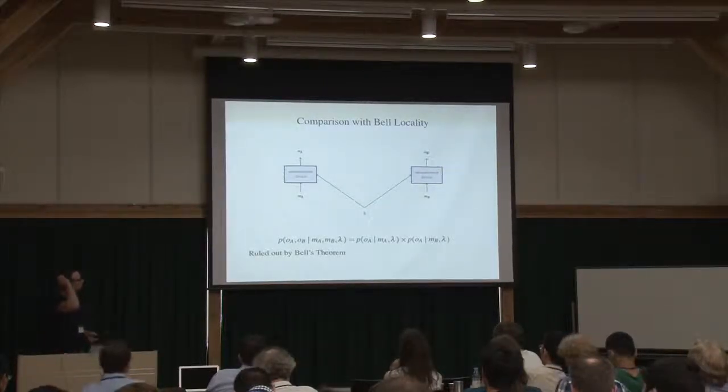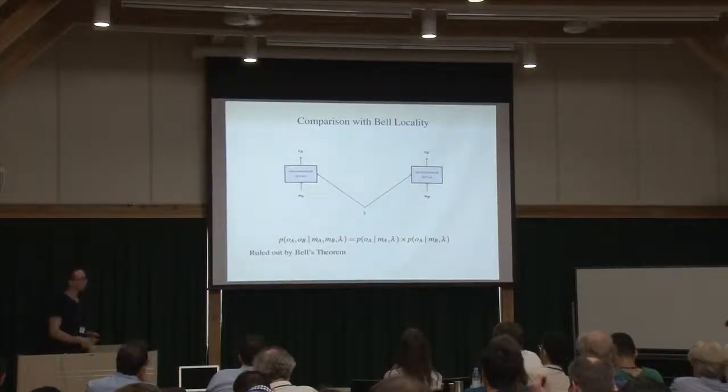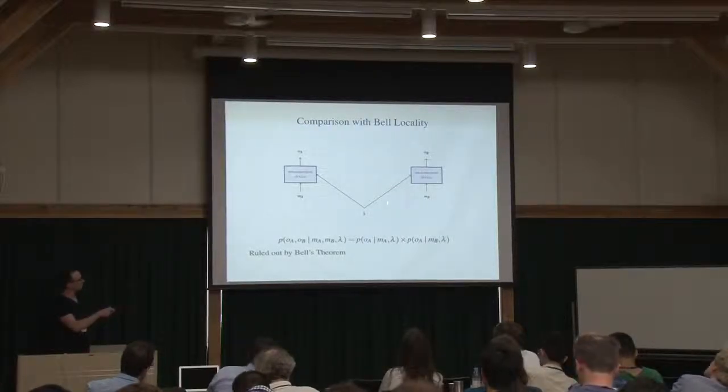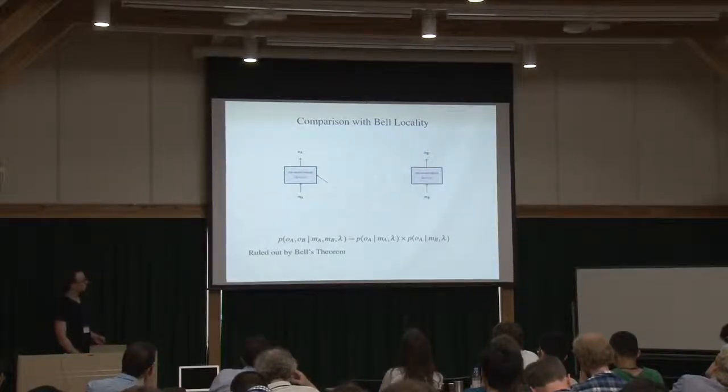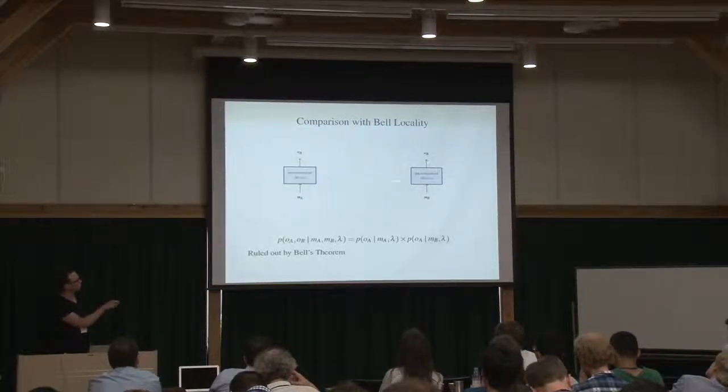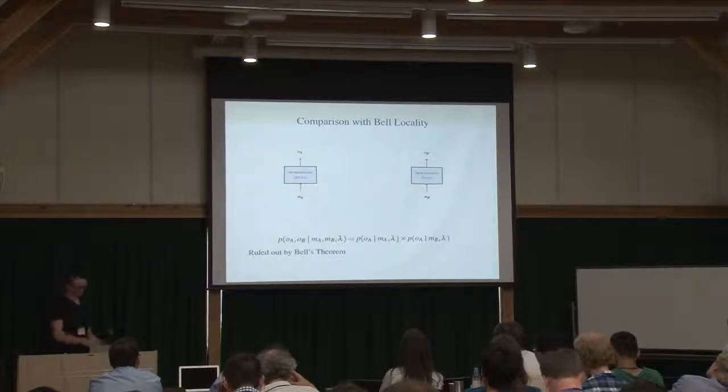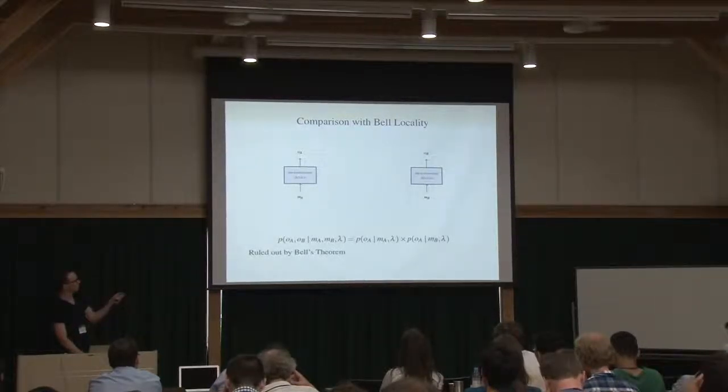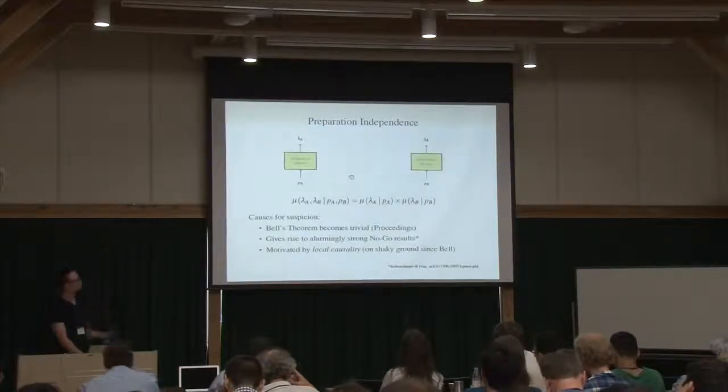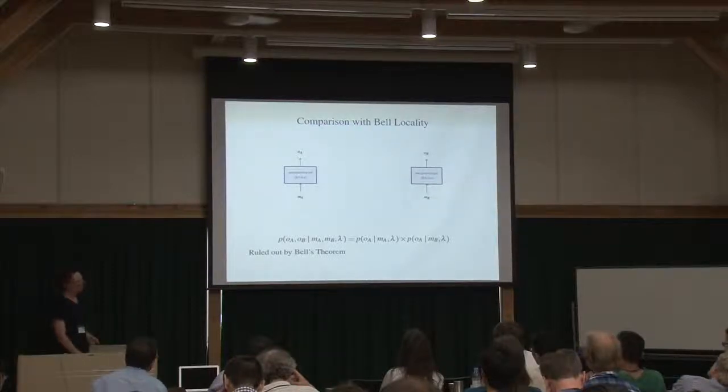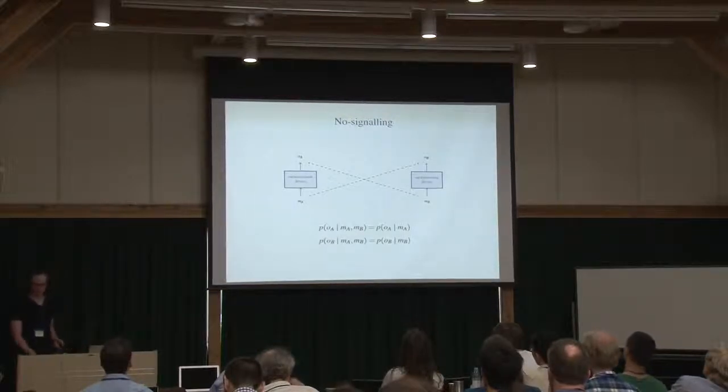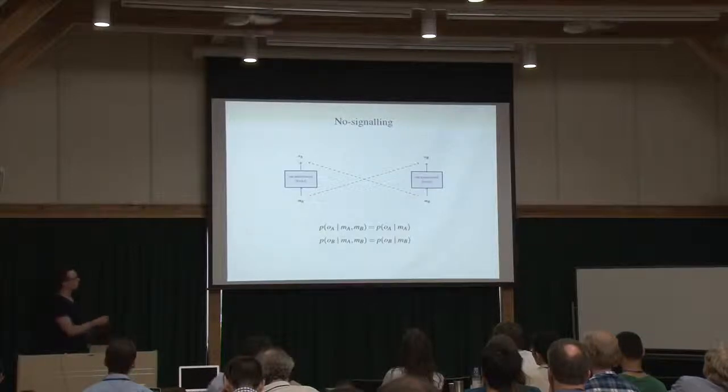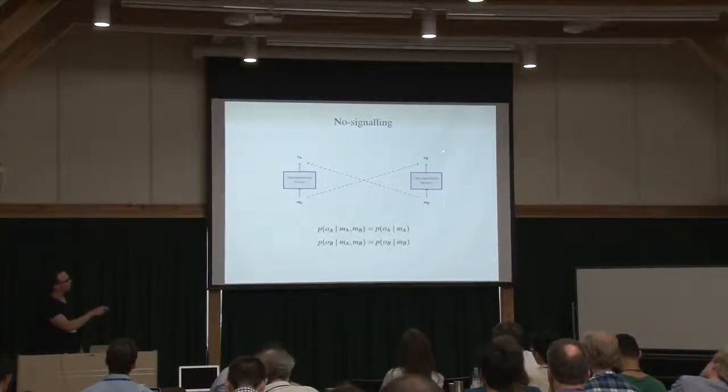I want to make a comparison between this preparation independence assumption and Bell's locality. They're quite similar in a lot of ways. So Bell's idea of locality was that if we condition on some state as a common cause, the correlations between these two things, remote measurements and outcomes, should factorize. So you can see it's essentially the same here. I'm talking about measurement devices and before I was talking about preparation devices. Bell's theorem ruled this out. Something that's not ruled out in quantum mechanics that we know actually is satisfied is no signalling. This seems like a reasonable independence assumption.